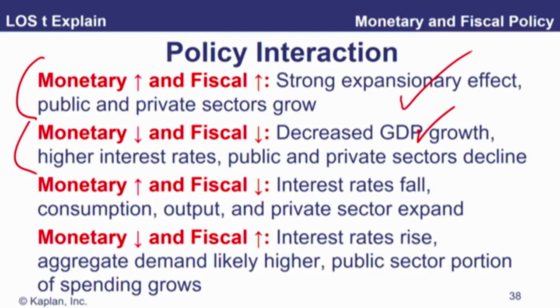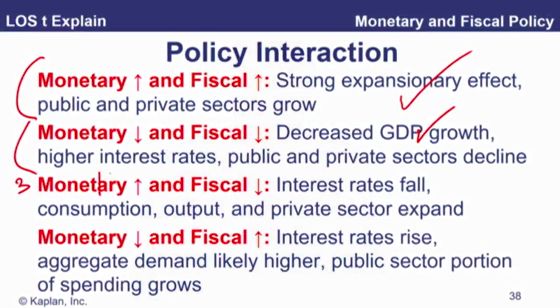The other two are more interesting. In the third scenario, monetary is expansionary and fiscal is contractionary. The monetary element will impact interest rates — expansionary monetary means more cash in the economy and lower interest rates, while the fiscal side — government spending — affects the public sector. So monetary affects the interest rate, fiscal affects the public sector. Your monetary effect is to bring down interest rates, so consumption, output, and the private sector should expand. Alongside that, as the fiscal effect, the public sector is shrinking at the expense of that private sector.